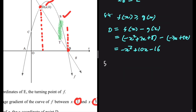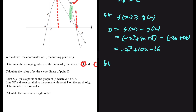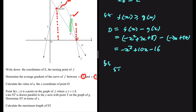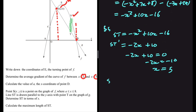Now for the maximum length of ST: ST equals minus X squared plus 10X minus 16. We differentiate: ST prime of X equals minus 2X plus 10. Setting this equal to 0 gives minus 2X plus 10 equals 0, so X equals 5. Substituting X equals 5 into ST: minus 25 plus 50 minus 16 equals 9. So the maximum length of ST is 9.